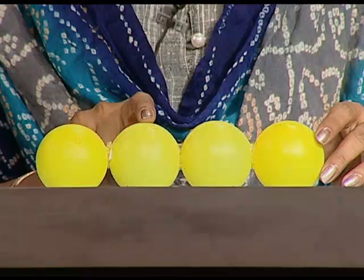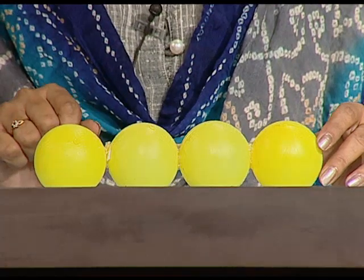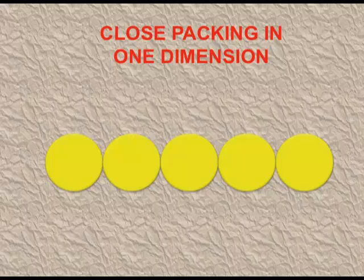The coordination number means the number of touching spheres, that is, the number of nearest neighbours. In one-dimensional packing, the coordination number is 2 because each atom touches exactly two atoms. You can see the atoms arranged in one row.